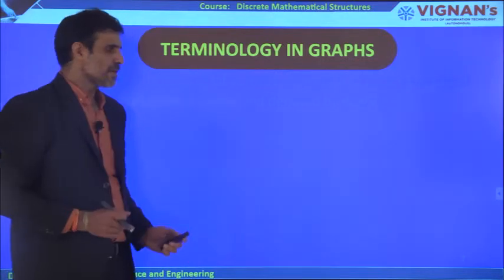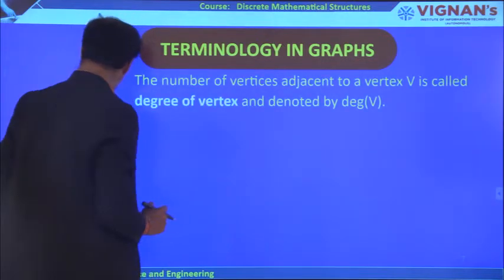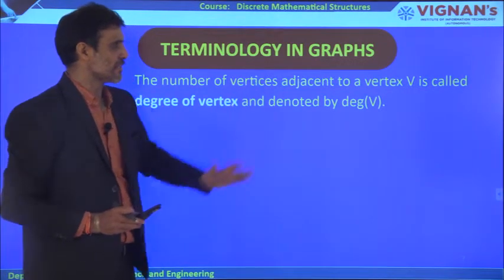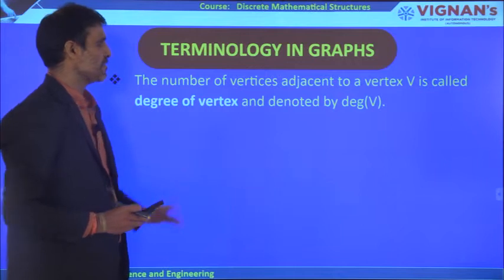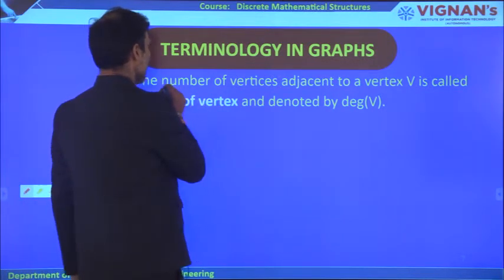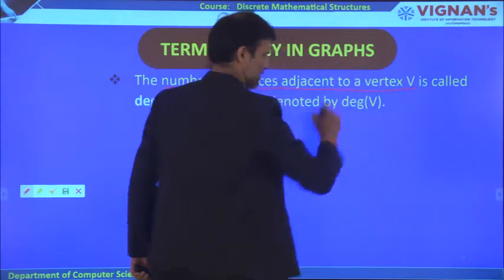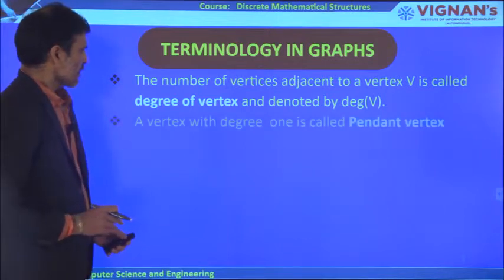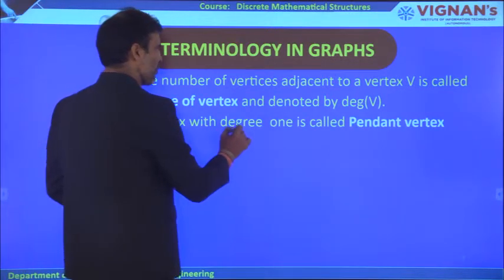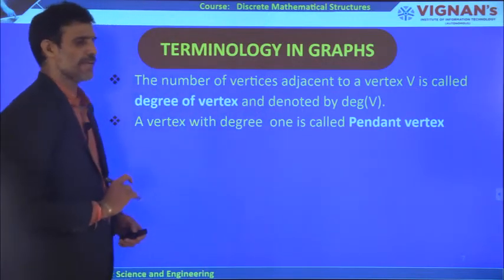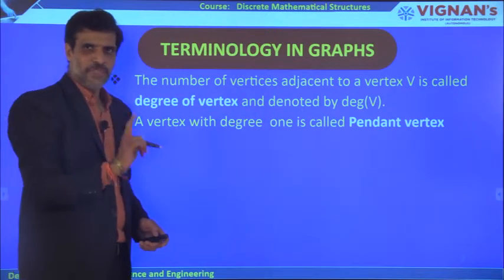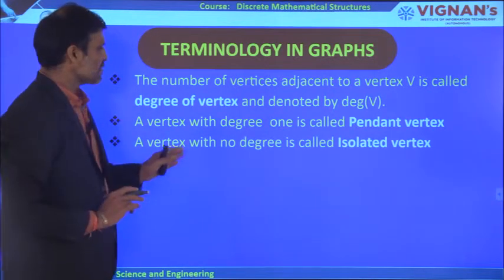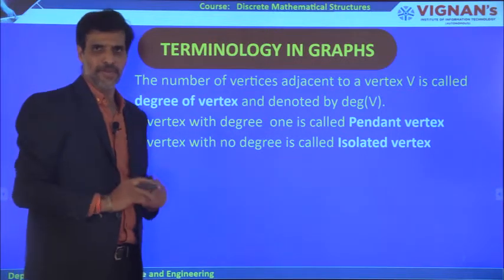The next important term is degree of a vertex. The number of vertices adjacent to a vertex V is called the degree of that vertex. If a vertex has degree 1, it is called a pendant vertex. A vertex with degree 0 is called an isolated vertex.